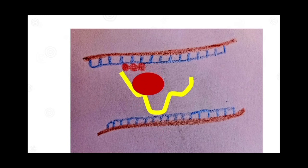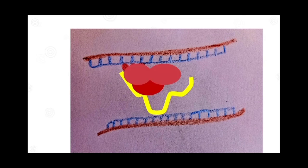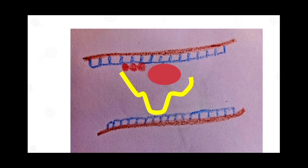Embolization is when the thrombus detaches from its site of origin and moves to a distant site. Dissolution occurs due to fibrinolytic activity and can happen in a recently formed thrombus — fibrinolytic drugs can be given in such cases. Organization involves ingrowth of smooth muscle cells, fibroblasts, and endothelial cells. Re-canalization is when capillaries grow inside the thrombus, potentially re-establishing normal blood flow.